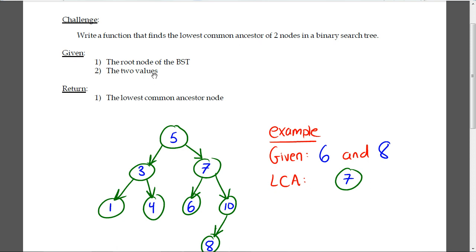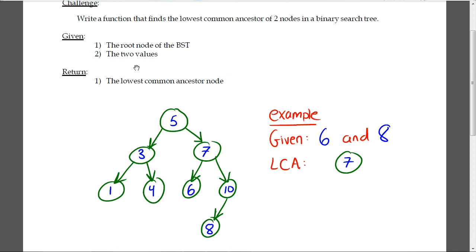By two values I mean two integers. We will give you the two integers contained within those two nodes whose common ancestor you have to find. We'll look at an example right here.